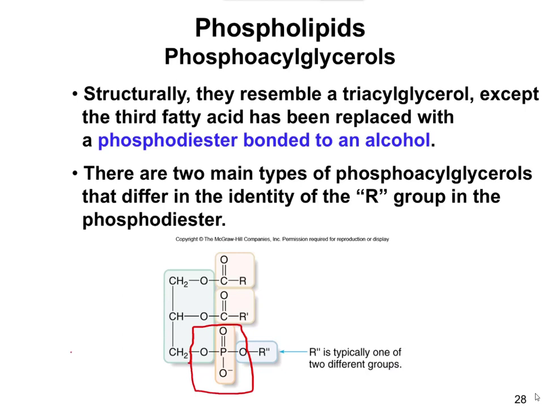An ester is when you have a C double bonded to O, bonded to O, bonded to a C on both sides — that's going to be an ester linkage. A phosphodiester basically takes that carbonyl carbon and replaces it with a P. And then 'diester' basically means instead of it only going in one direction, now it's going to go in both directions. So instead of the carbon being directly attached to the C, now it's going to be an oxygen over to a C. That's why it's called a phosphodiester.